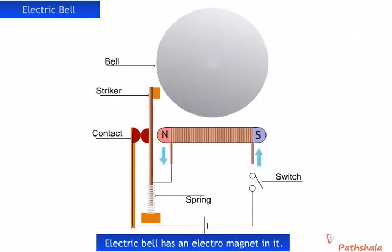Electric bell consists of a coil of wire wound on an iron piece. The coil acts as an electromagnet. An iron strip with a hammer at one end is kept close to the electromagnet.